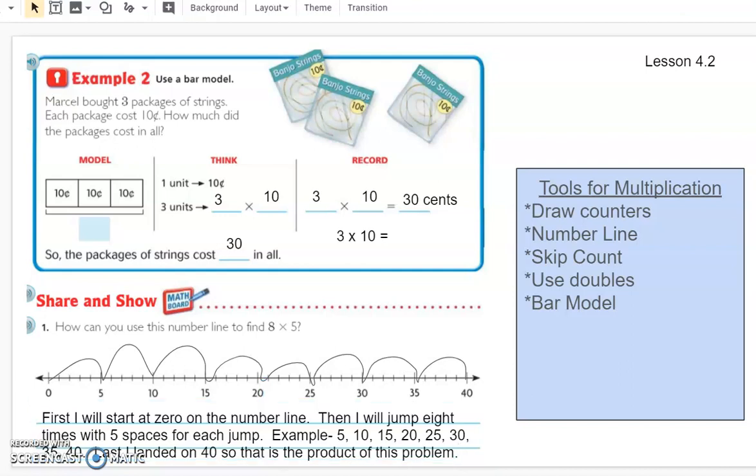So that was another type of strategy we learned today. We learned the bar model strategy. We reviewed our number line strategy, which is essentially skip counting. So those are ways that you can solve problems. Today, when you work on your Google form, you'll be practicing skip counting by fives and tens to solve your problem. Remember, always think if you're having some trouble, think whatever your first factor is, that's how many groups and then the next factor is how many are in each group. So three groups of 10. That will help you as you're working through your problems. Good luck and if you need any help, you may gladly message me in Schoology. I will see you tomorrow for lesson 4.3.